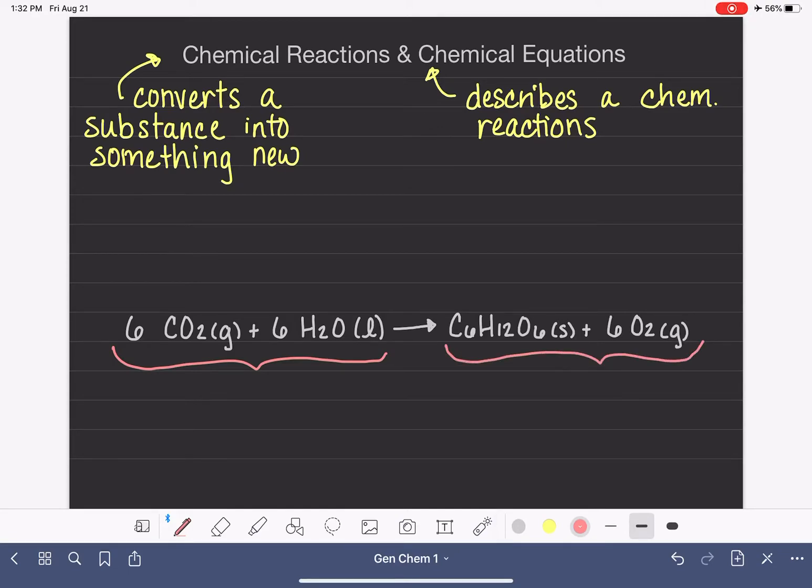The starting material is always referred to as the reactant or reactants, if there are more than one. These are the things that we are starting with. And our final material is always referred to as the product or products. These are the things that we make in this reaction.